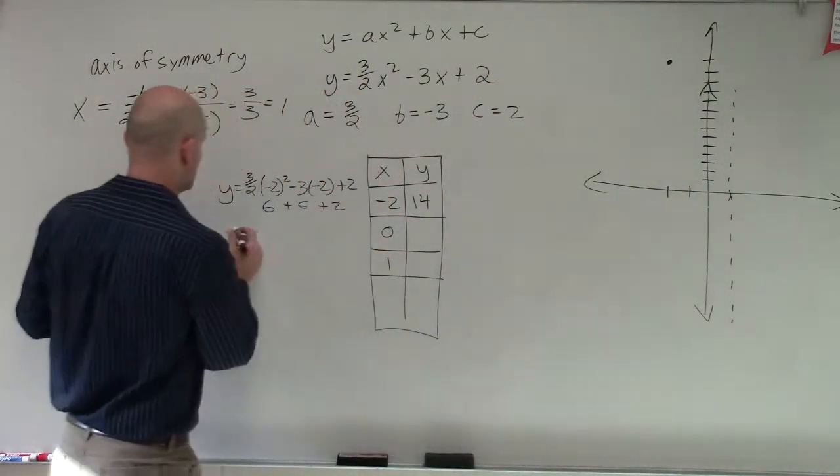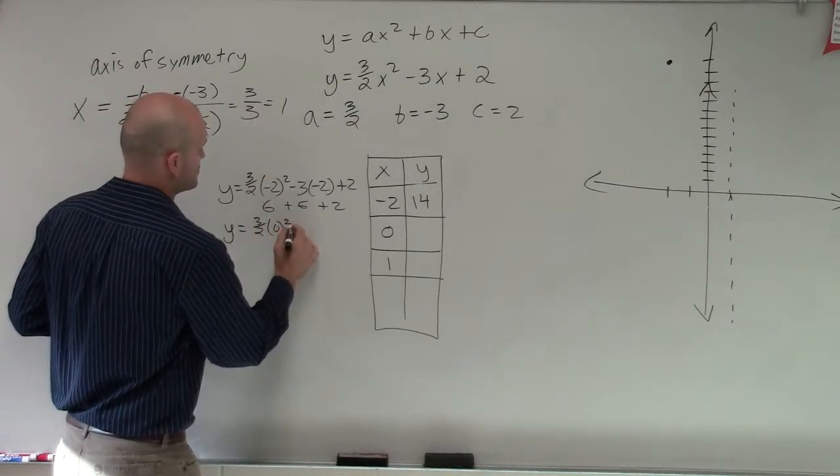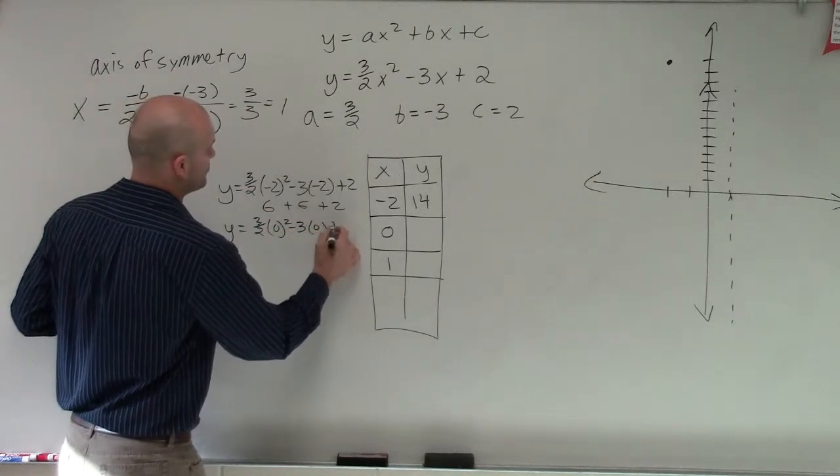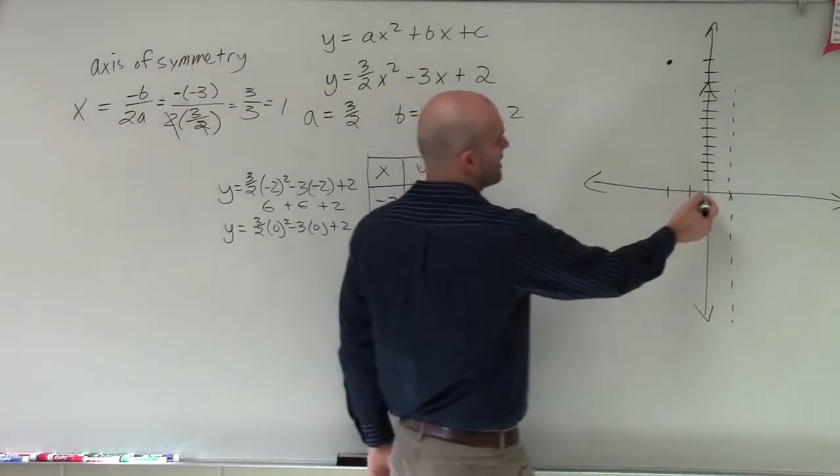And then let's go to 0. So if I plug in 0, y equals 3 halves times 0 squared minus 3 times 0 plus 2. And I'm just going to simply get 2. So at 0, I have 2.